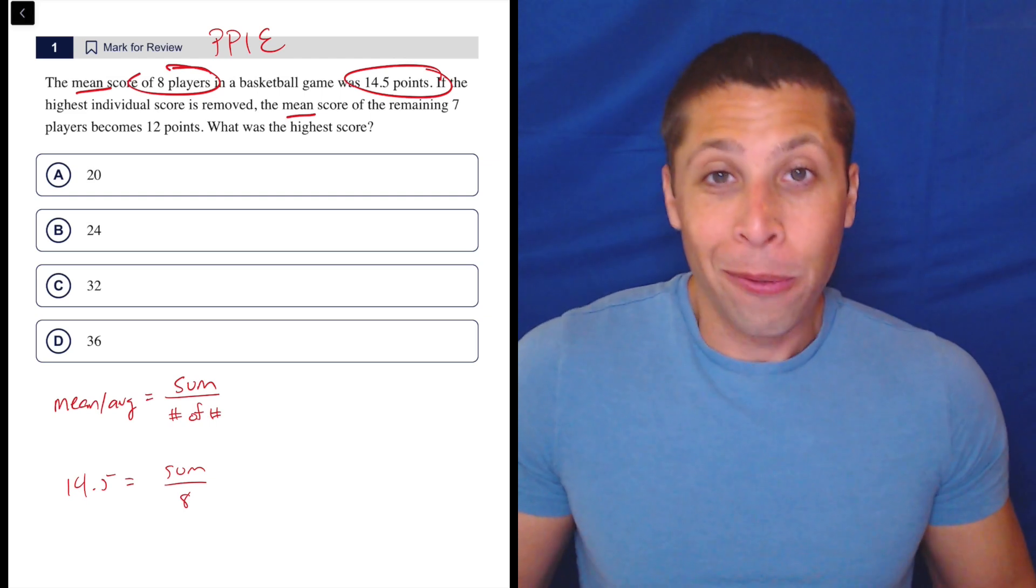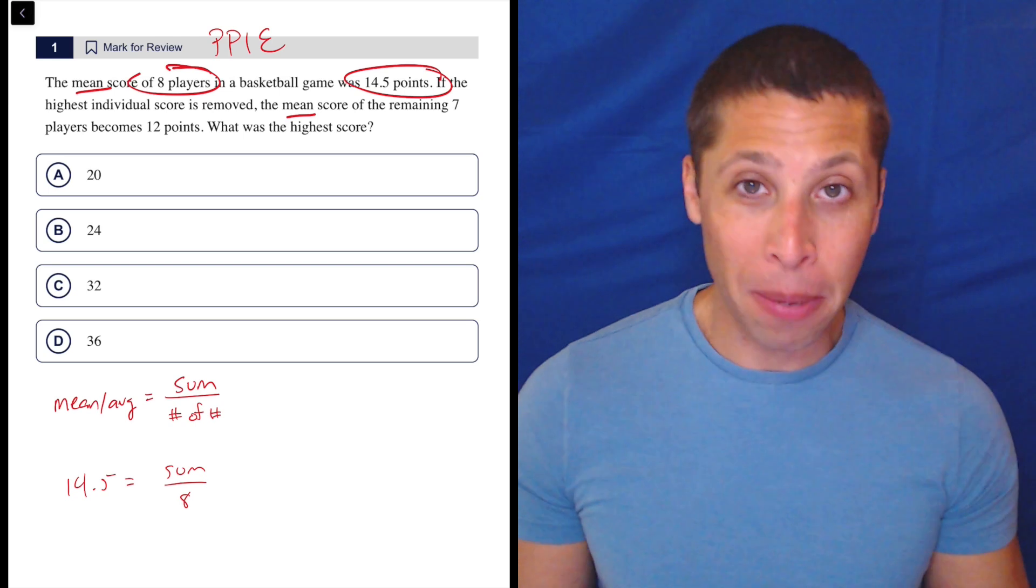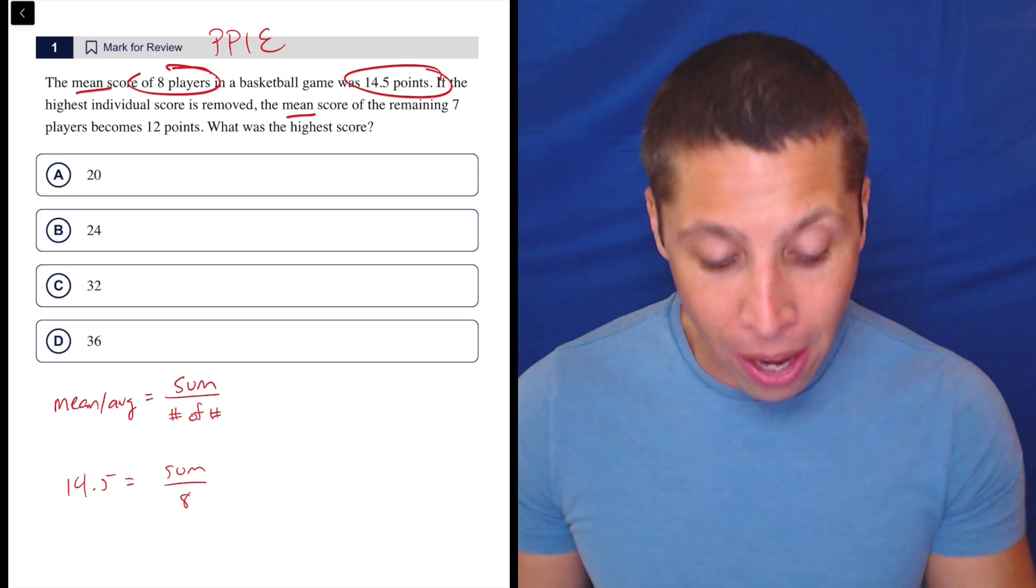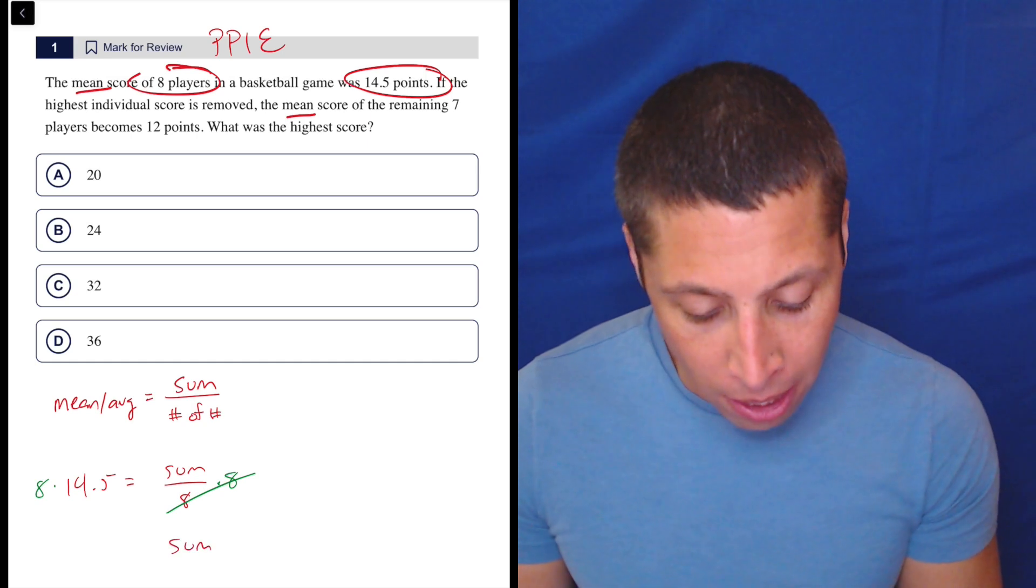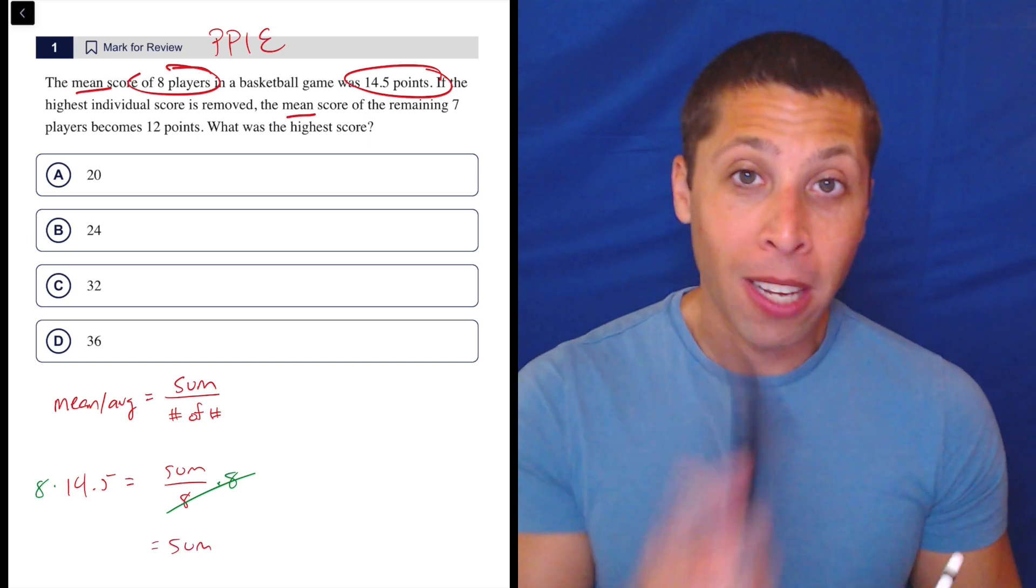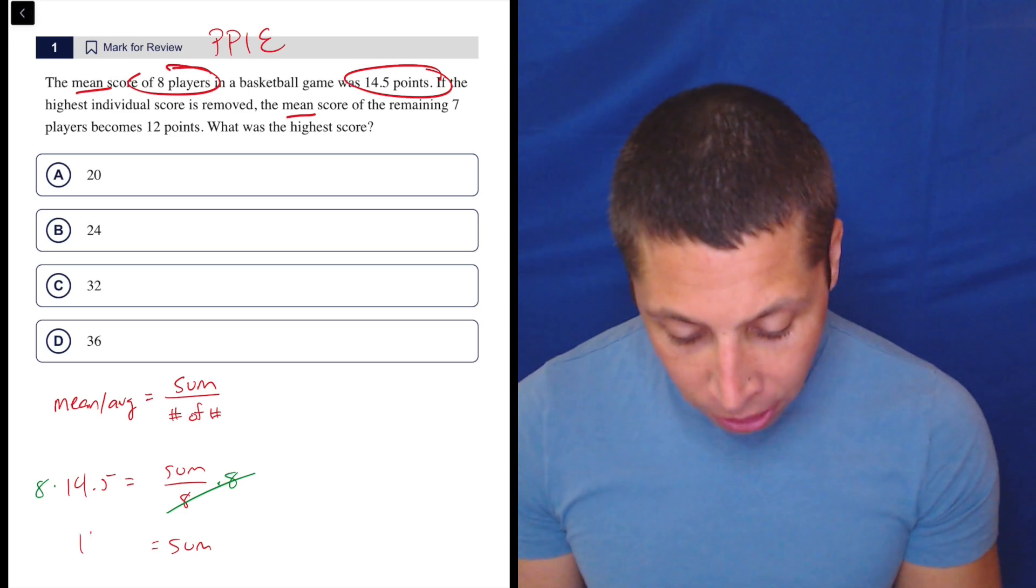So what do you do here? Well, hopefully you've done enough algebra in your life that you know that if you've got a missing piece and you can solve for it, you might as well. So just multiply both sides by eight. The sum is going to be whatever my calculator tells me it's going to be. So 14.5 times eight is 116.